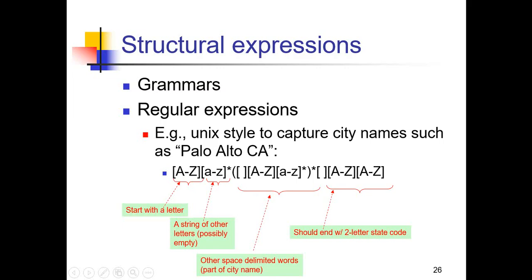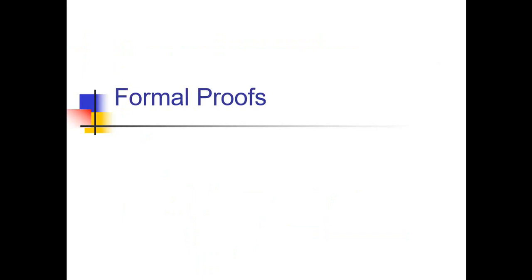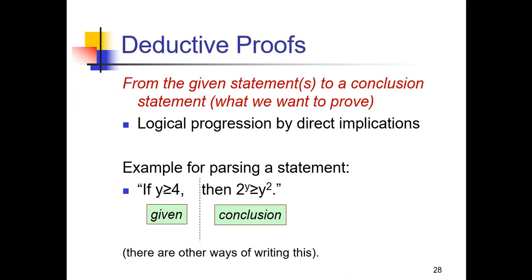Now we are getting into formal proofs - deductive proofs. From the given statement to a conclusion statement, what we want to prove, the logical progression by direct implication. For example, in this statement...